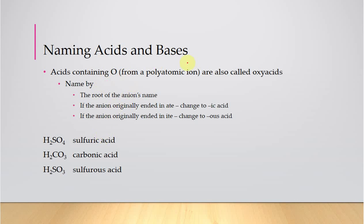When acids contain oxygen, specifically from a polyatomic ion, they're called oxy acids. The naming rule: if the anion originally ended in -ate, change it to -ic acid. So hydrogen sulfate becomes sulfuric acid; carbonate becomes carbonic acid. If the anion originally ended in -ite, change it to -ous acid. So sulfite becomes sulfurous acid.